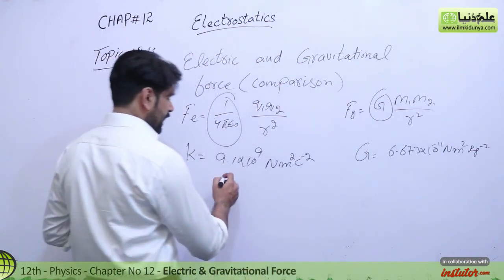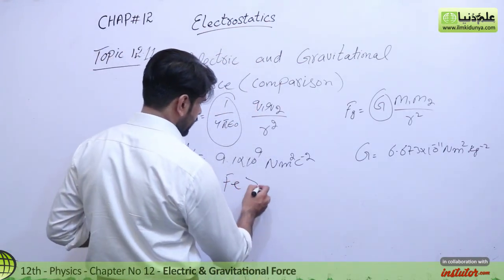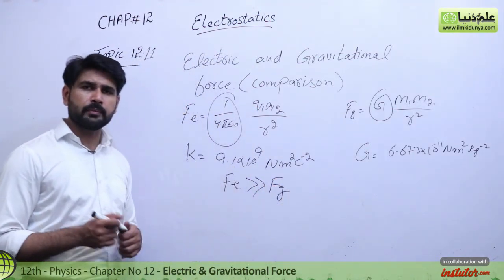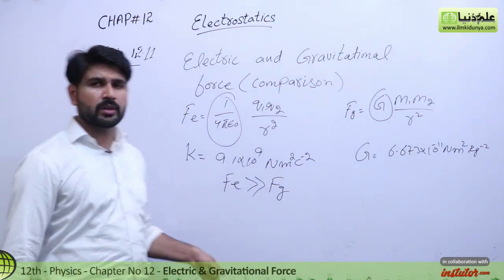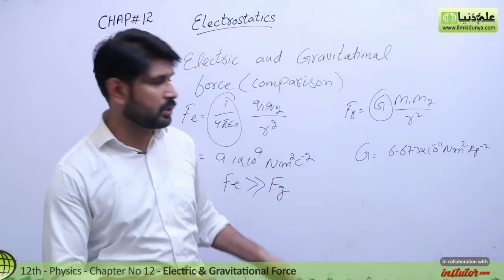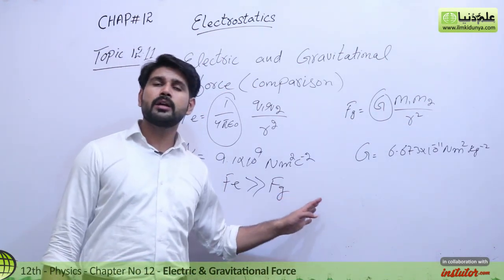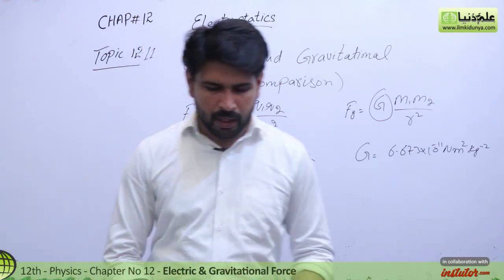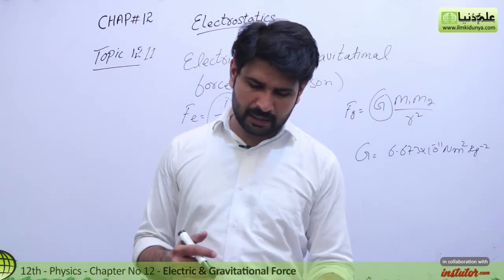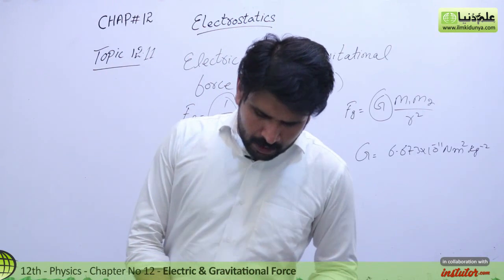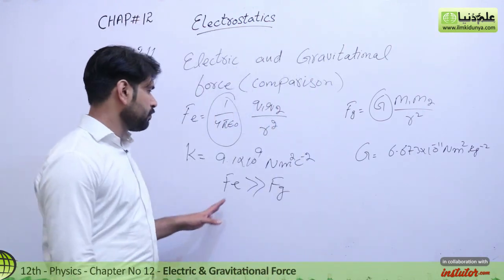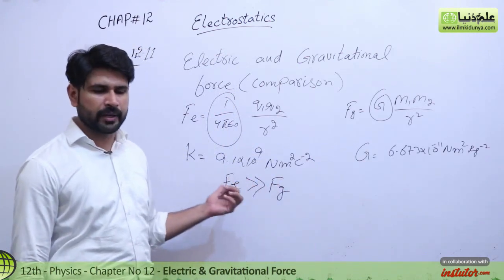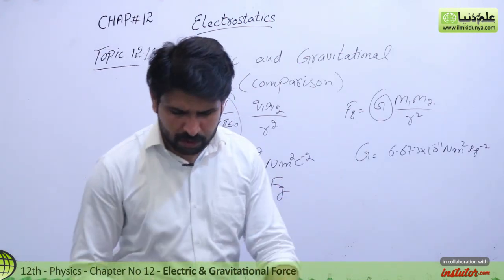We can say that the electric force Fe is much greater than the gravitational force Fg. This means that the electrostatic or Coulomb force is very, very much greater than Newton's gravitational force. This is because the value of G is very, very small compared to the value of k — these two are the proportionality constants.